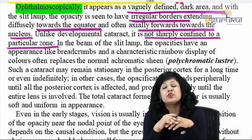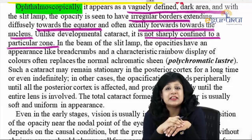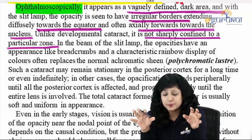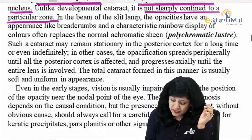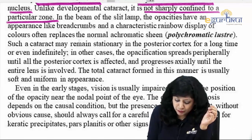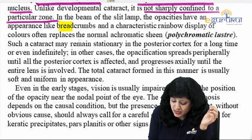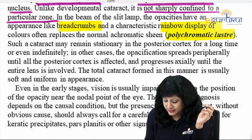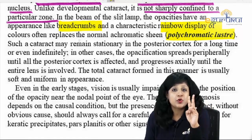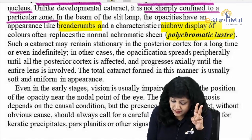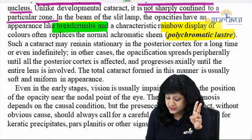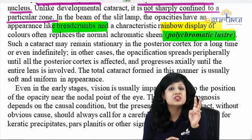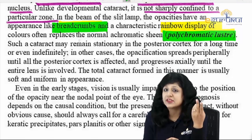A specific feature of complicated cataract is that it is not particularly defined — it is going to spread. In the beam of the slit lamp, the opacities have an appearance of breadcrumbs and a characteristic rainbow display of colors — that is your polychromatic luster. The two important features of complicated cataract are the breadcrumb appearance and the polychromatic luster, which is why it is also called the rainbow cataract.